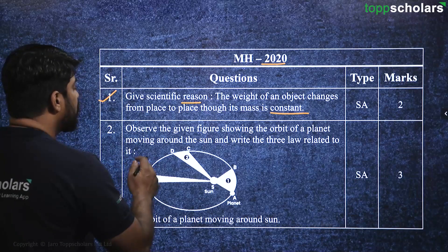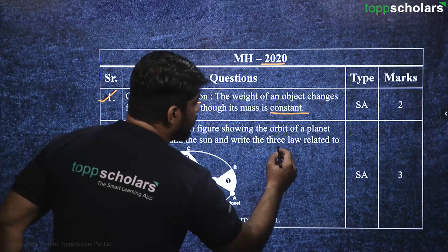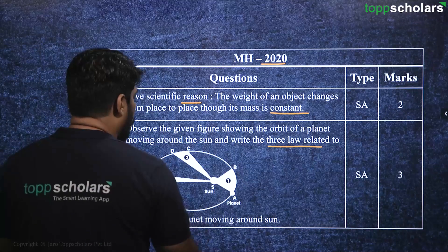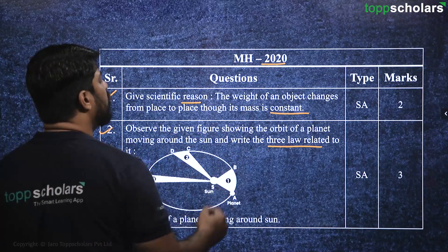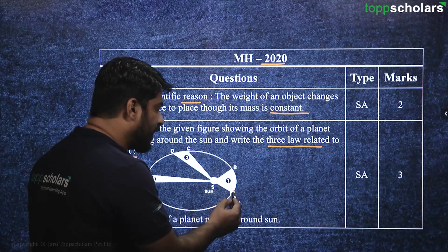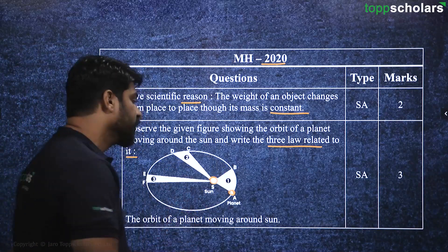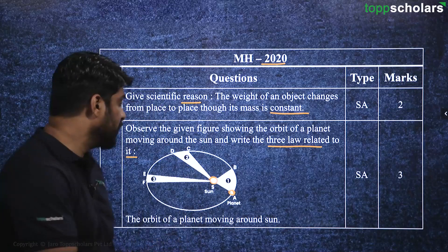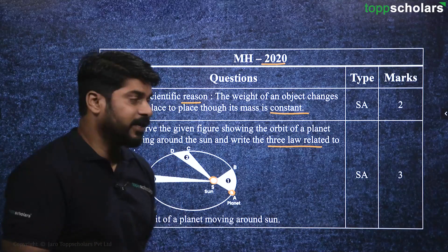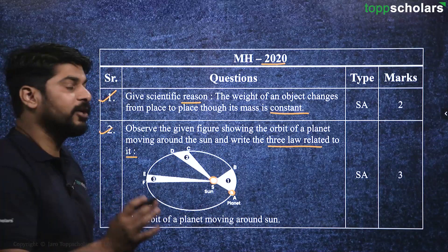The next question: observe the given figure showing the orbit of a planet moving around the sun and write the three laws related to it. The planet is revolving around the sun, and we know there are three laws relating this motion — these are called Kepler's laws. We will state those Kepler's laws at the end of this lecture.